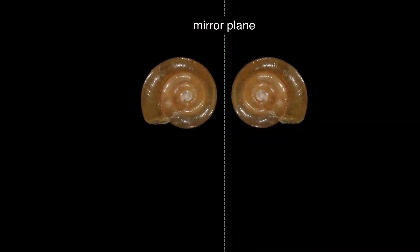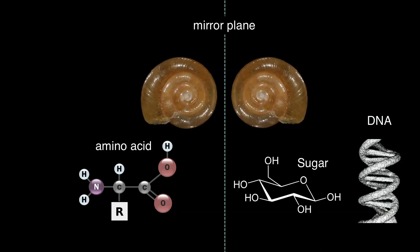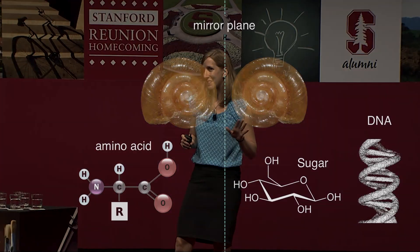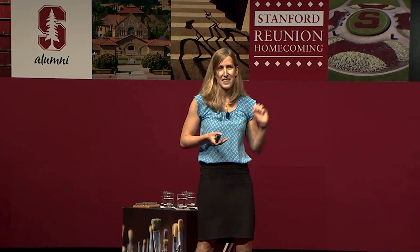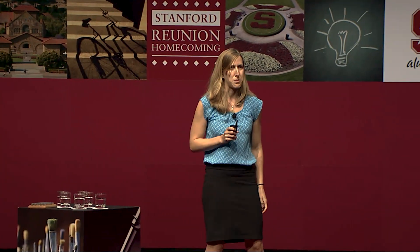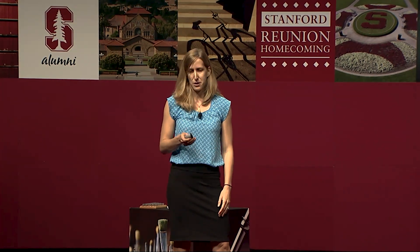In nature, there are many molecules that, like the snail shell, have a certain handedness associated with them. These include molecules like DNA, which in nature is always right-handed, and sugars like glucose, which are also exclusively right-handed in nature. And also amino acids, the building blocks of proteins, which are exclusively left-handed. This homochirality of nature — the fact that we don't find naturally made left-handed DNA or right-handed amino acids — is perhaps one of life's greatest mysteries, and one that we as chemists in the lab haven't been quite as good at reproducing.